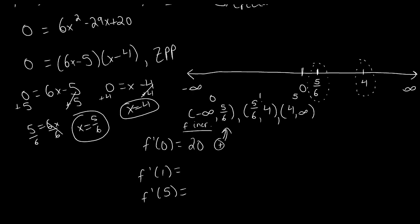For f prime of 1: 1 squared is 1 times 6 gives us 6, minus 29 times 1 is minus 29, plus 20. Adding 6 and 20 gives 26, then 26 minus 29 gives negative 3. This is negative. So on the interval 5/6 to 4, f is decreasing.